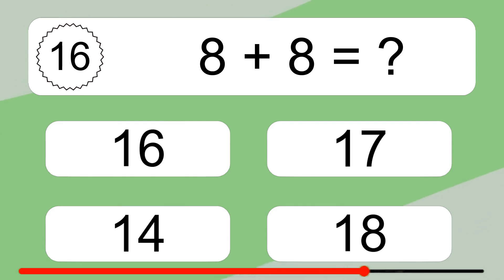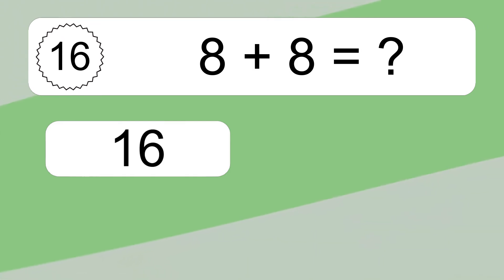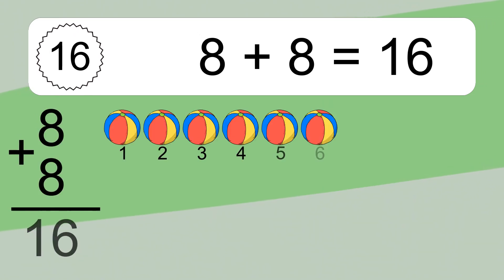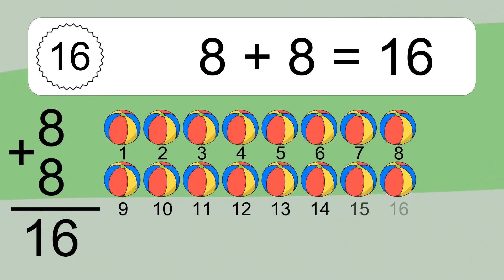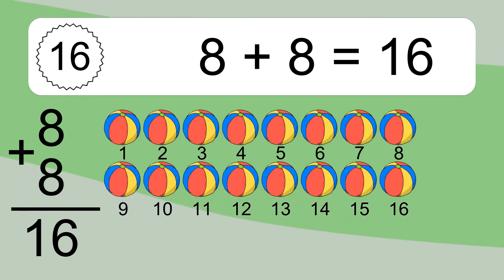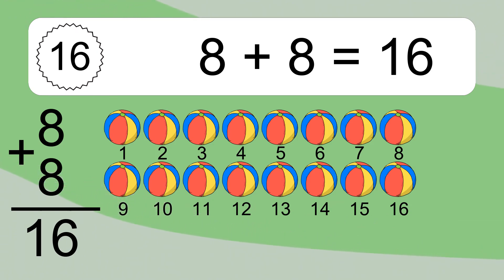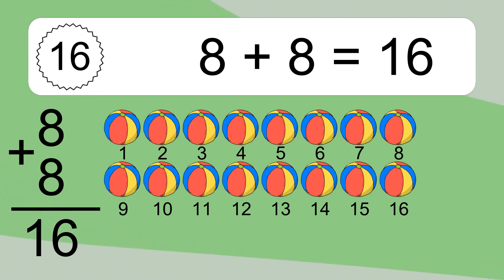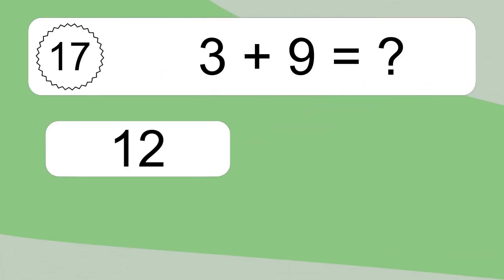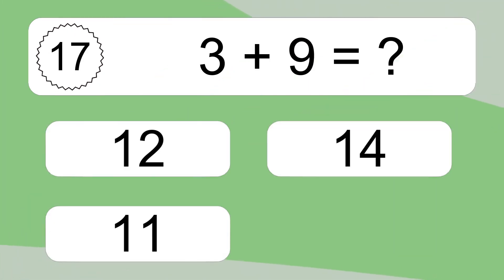8 plus 8 equals what? 8 plus 8 equals 16. Let's count it: 1, 2, 3, 4, 5, 6, 7, 8, 9, 10, 11, 12, 13, 14, 15, 16.